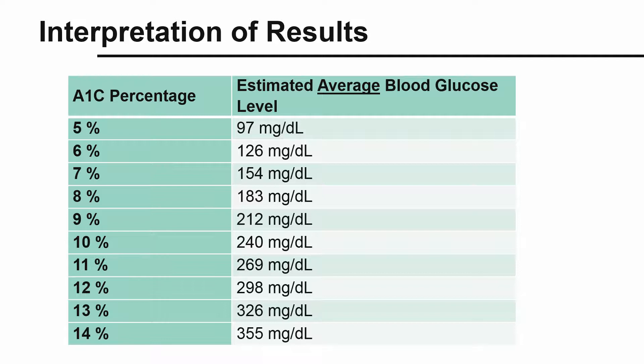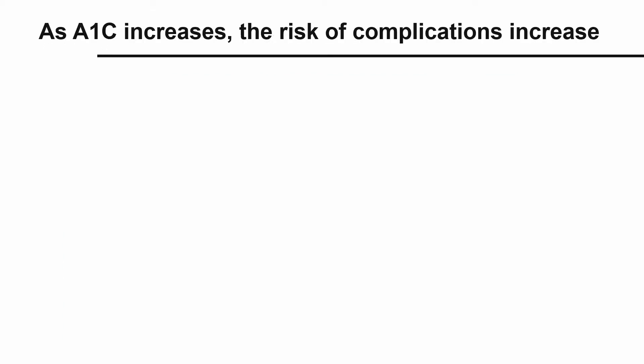It is important to remember that A1c levels do not compare with daily blood glucose levels, because A1c is an average. A lower A1c percentage indicates better average glucose control. Small changes in your A1c percentage equal big changes in your blood glucose levels. As A1c increases, the risk of complications increases.